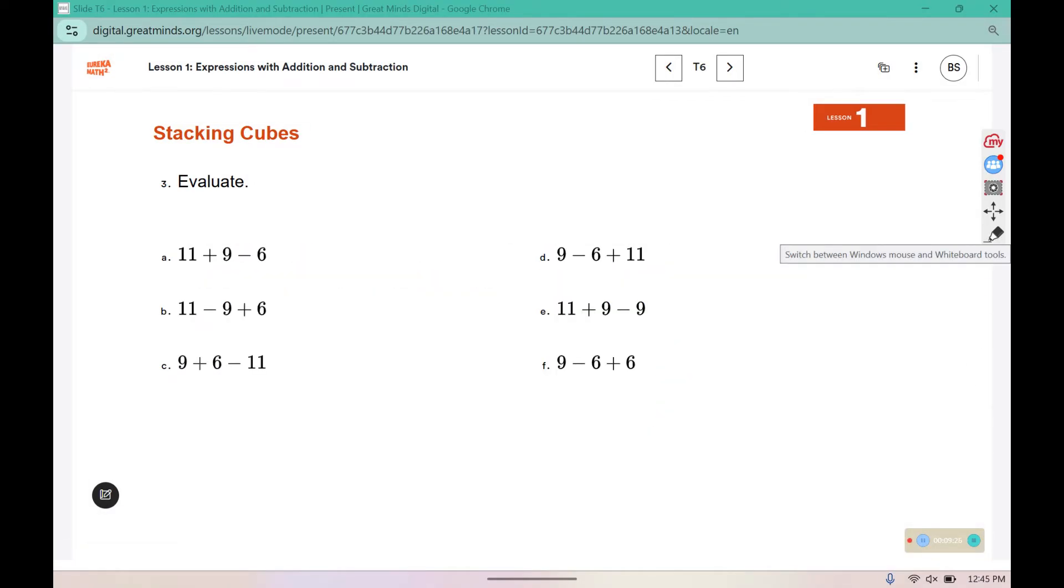We are going to evaluate these problems by moving from left to right, so we're going to start by adding. 11 plus 9 is 20, and then subtracting the 6. 20 minus 6 is 14. This one tells us to do the subtraction first. 11 minus 9 is 2, and 2 plus 6 is 8. 9 plus 6 came first here. 9 plus 6 is 15, and then we subtract the 11. 15 minus 11 is 4.